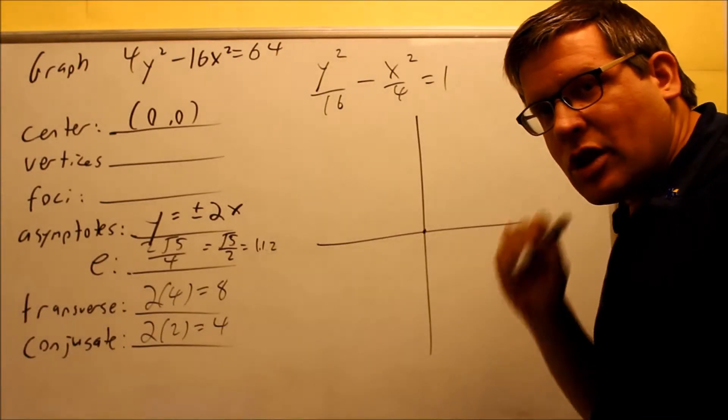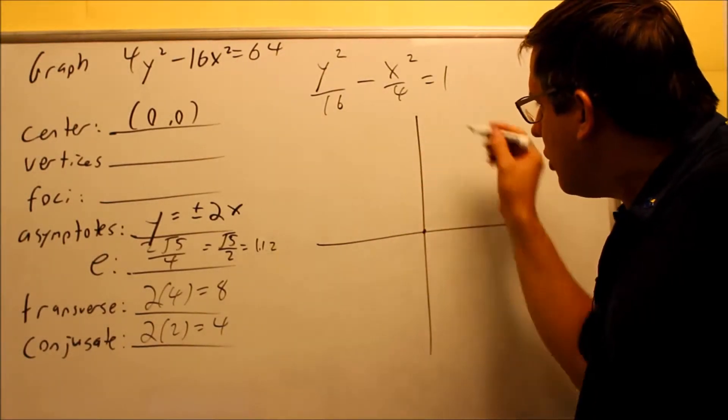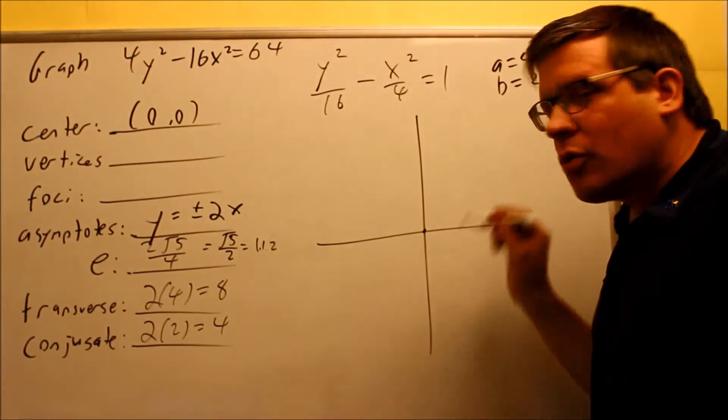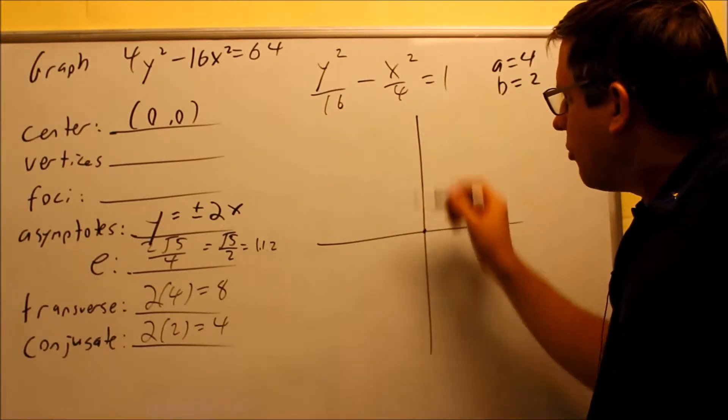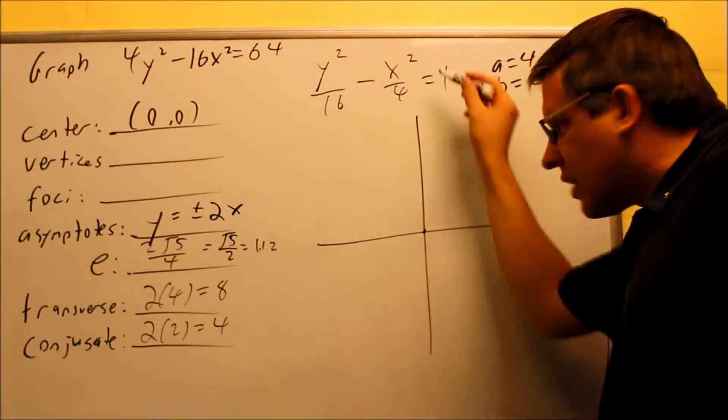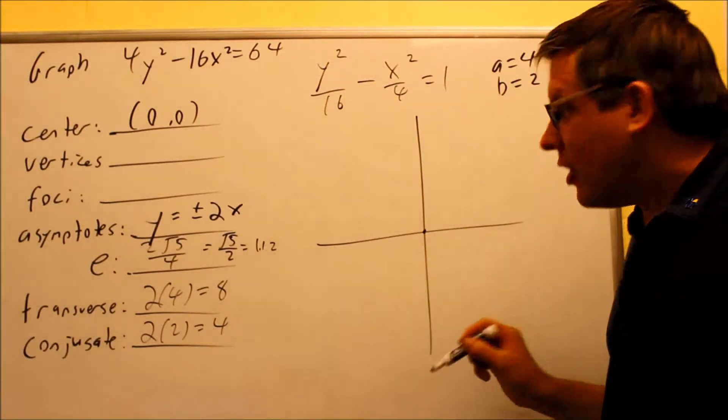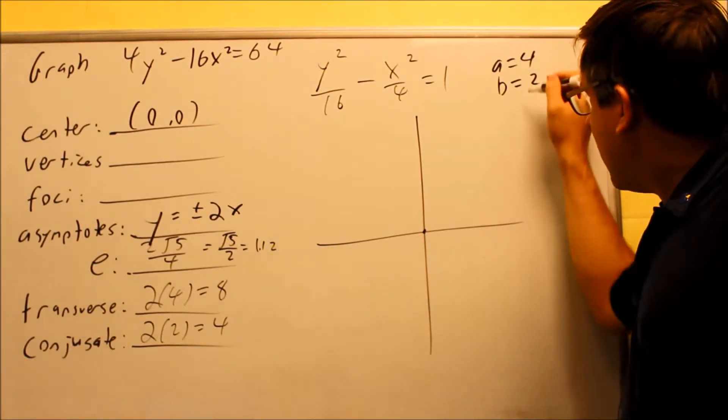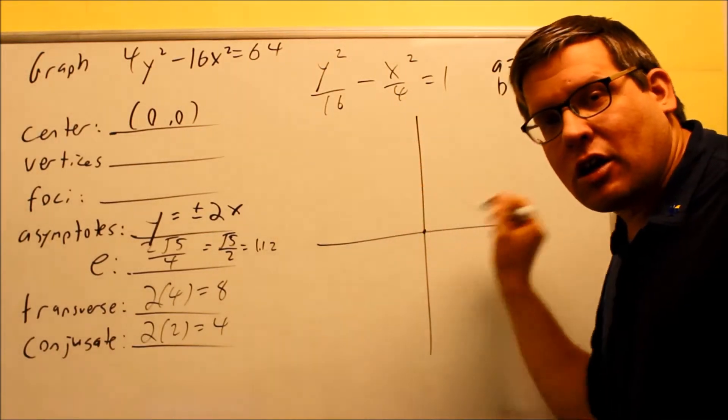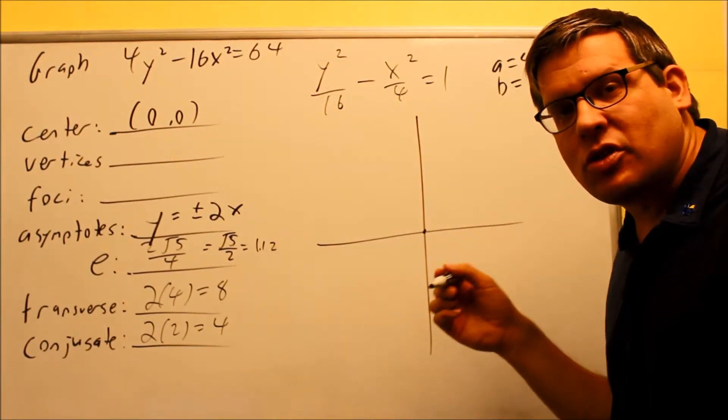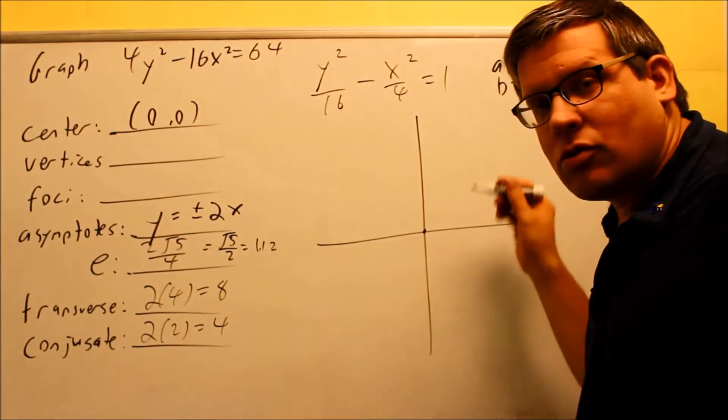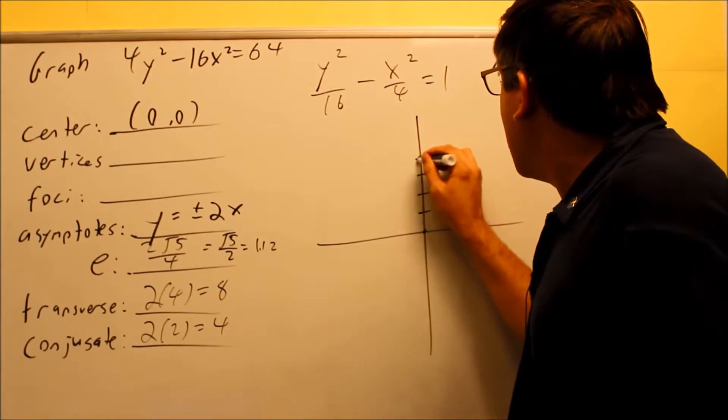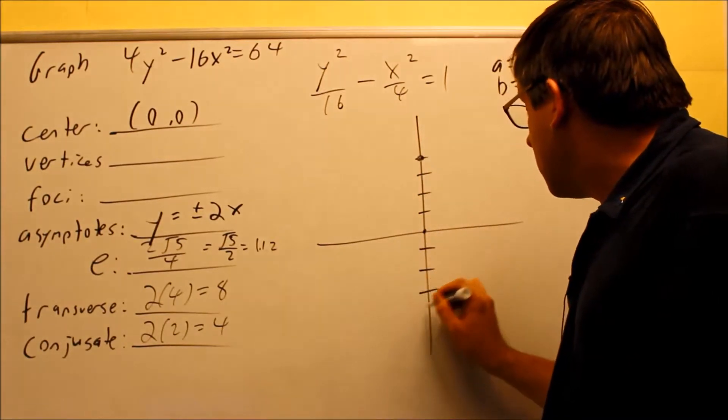The a and the b that you have, that we talked about before, are always what you're going to be using to create the box. So we already said that a was 4 and b was 2, so we're going to use that. Now, I also determined that because the y squared comes first, that's the direction you have to go with the a value. It opens up and down. So from the center, I need to create the box by using a and b. The box is created so that way I can connect the corners with my asymptotes and that way it will give me a guide for drawing the actual hyperbola. So a goes up, we go up 4, we make a dot.